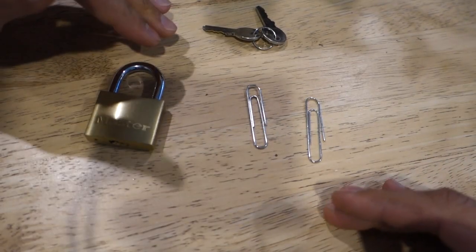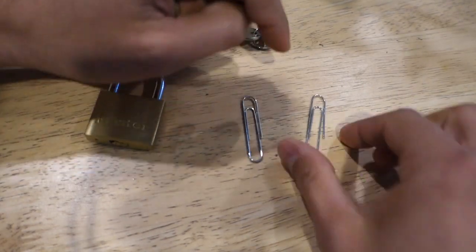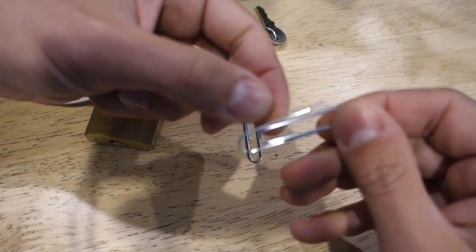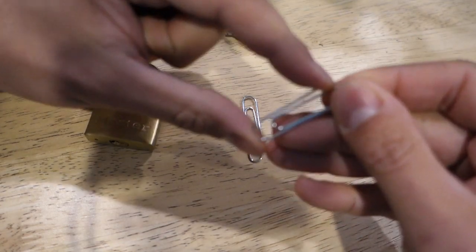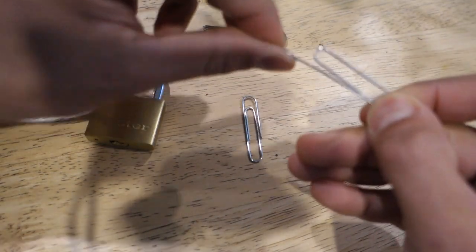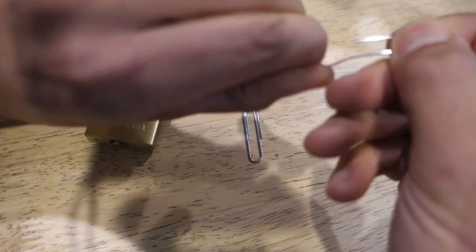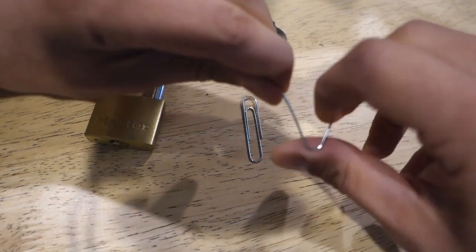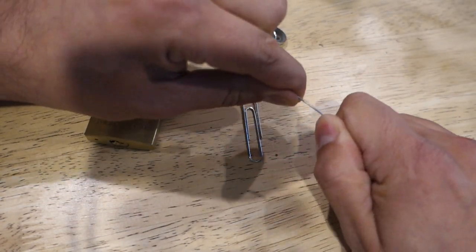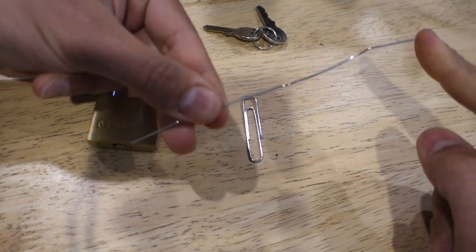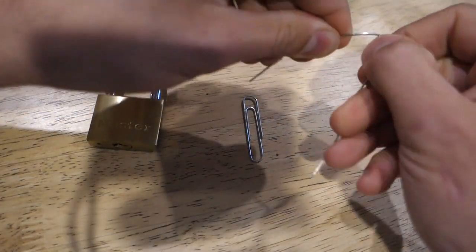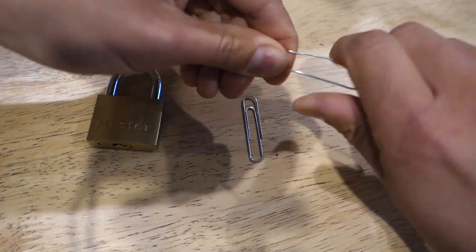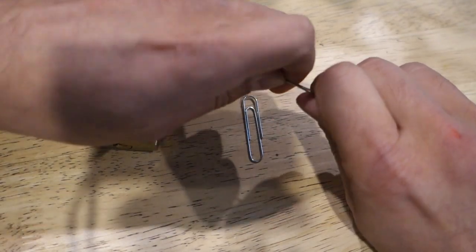So the first thing we're going to do is create our lock picking tools using these two paperclips here. We're going to use this first paperclip and create a tensioner tool. All we want to do is bend this out straight or as straight as possible. Once we've got that relatively straight, we're going to get the two ends and bend them to each other.